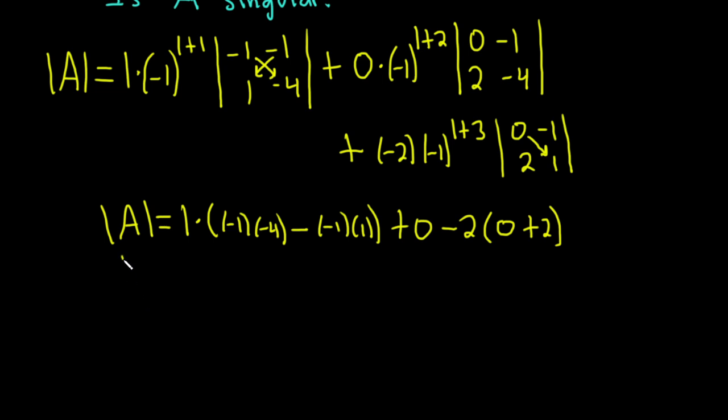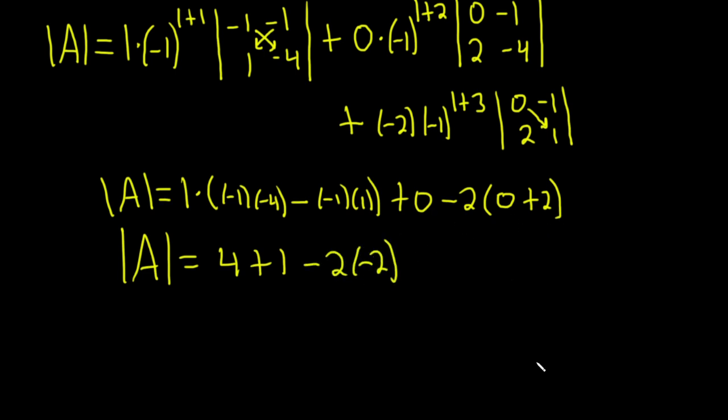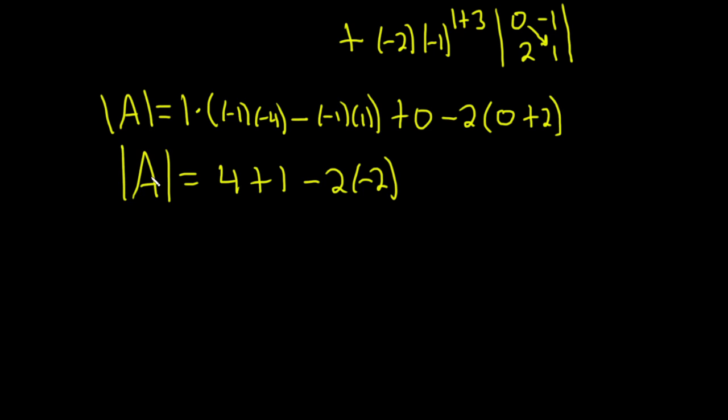So we have that the determinant of A is equal to, this 1 doesn't matter, so this is going to be 4 plus 1. And the 1's on the outside, so it goes away. And then minus 2 times 2. Getting to the end here. So the determinant of A, 4 plus 1 is 5.